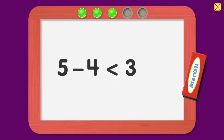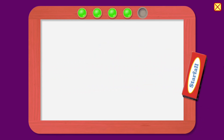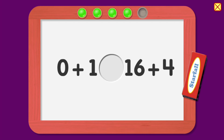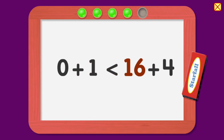Good job! Five minus four is less than three. Three is less than six. Great job! Zero plus one is less than sixteen plus four.